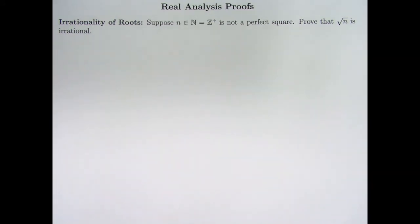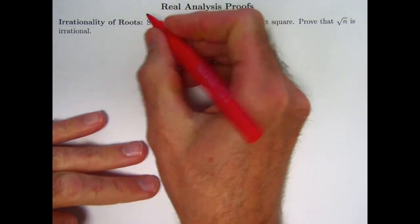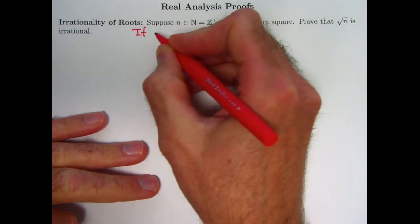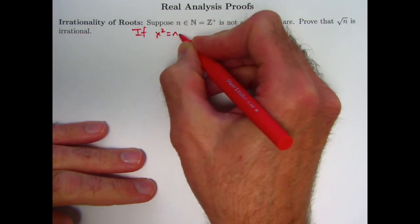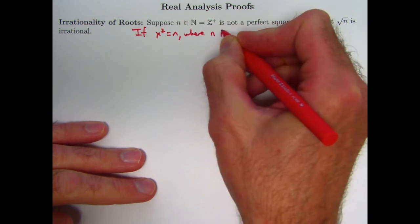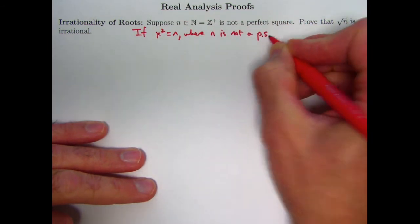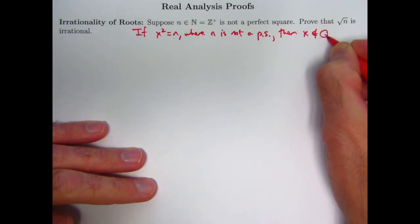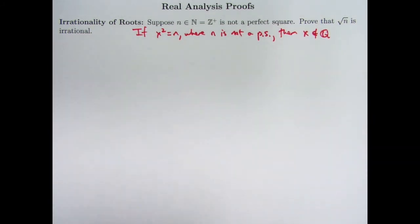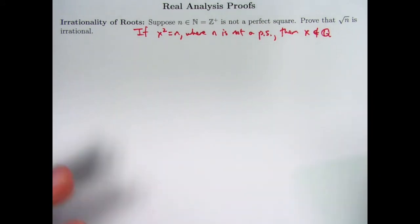Z stands for zahlen, which is a German word for numbers. Z+ would be the positive integers. So I've got an element of that set that's not a perfect square. I'm going to prove that the square root of that number is irrational. Actually, I'm going to be less ambitious than I could be. I'm not going to prove that the square root of n exists. I'm going to assume it exists and prove that if it exists, then it must be irrational. If x² = n, where n is not a perfect square (ps), then x is not an element of Q, the set of rational numbers. Q stands for quotient.